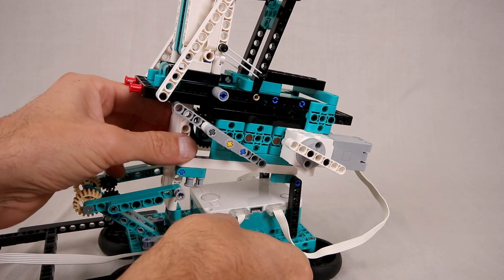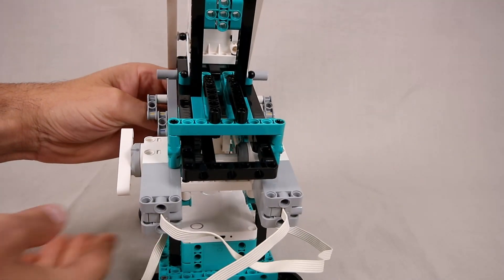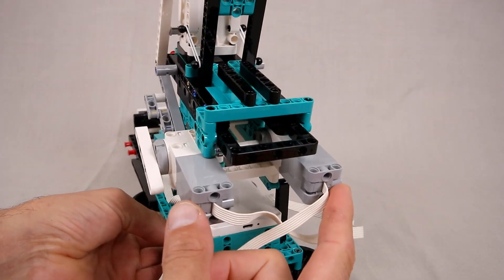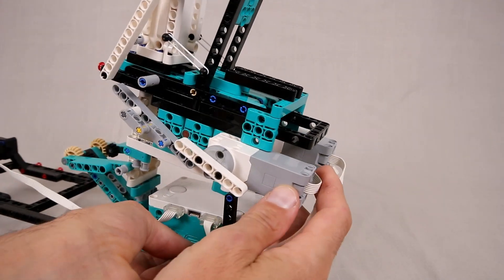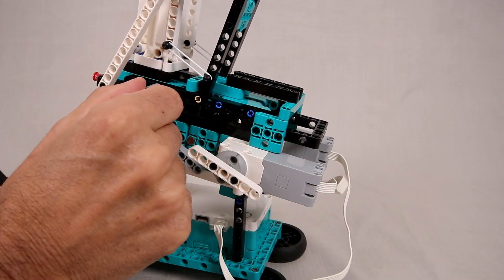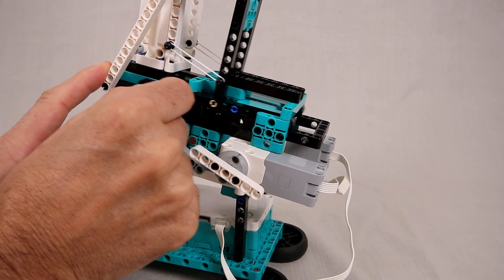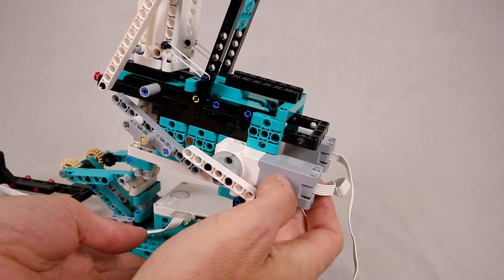Of course I don't want to manually control this launcher so there are two motors in the back which control the launch sequence. The reason I'm using two motors is it actually requires quite a bit of energy to load up these rubber bands and having two motors just gives us a lot more torque to do that.